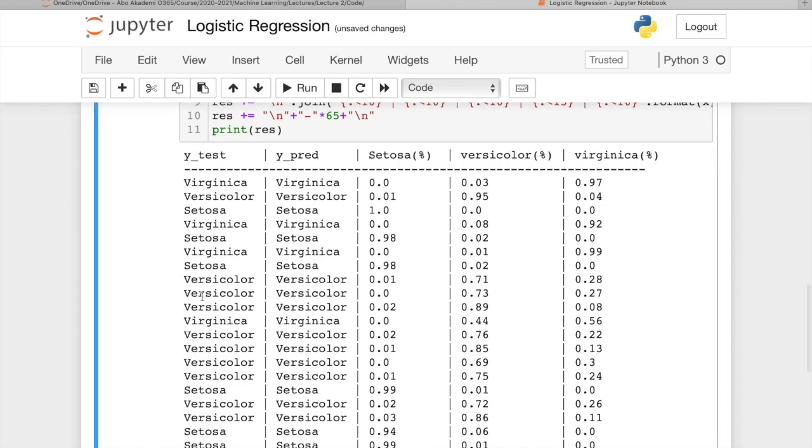As you see here, this column represents the Y test, the actual values, and the predicted values. And you see, this is exactly what I was saying - that logistic regression gives you a value, the probability of belonging to different classes. So for example, in this first one, Virginica, 97% our model predicted that it's going to be Virginica, and not so much in the other classes. That is why the model decided that it is a Virginica.